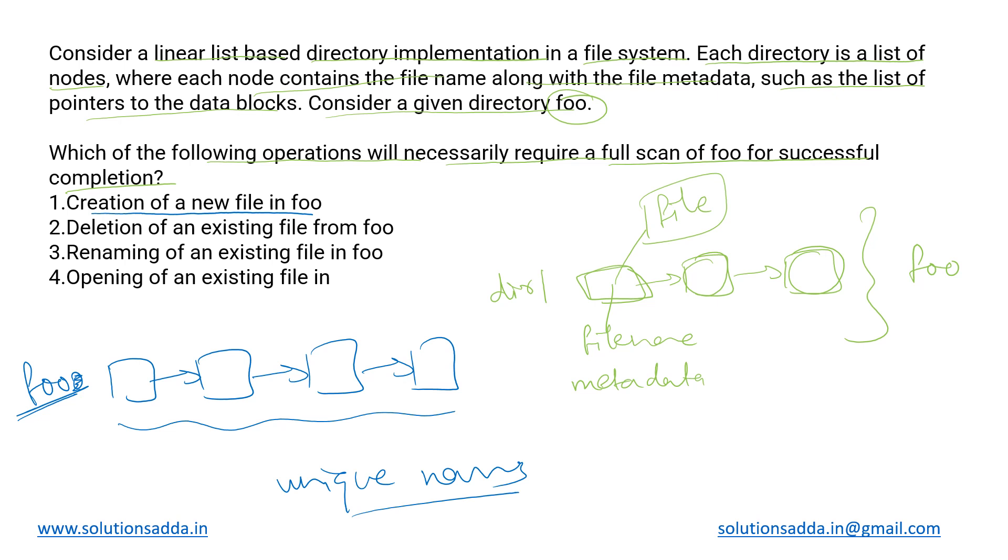If we want to create a new file, we can simply create a new node and attach it at the start or at the end of the linked list. But we will need to make sure that whatever name we are assigning to this particular file does not already exist in any of these. The unique name property has to be followed. If you want to insert this node A, we will have to traverse this entire list and check if the file name is already existing or not. This will require the complete scan.